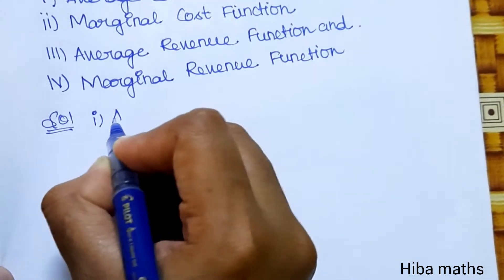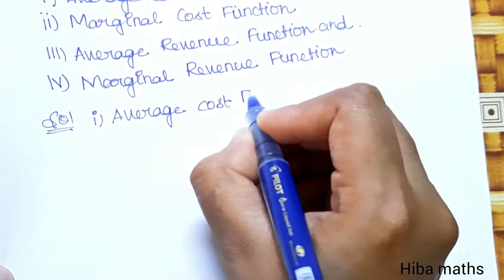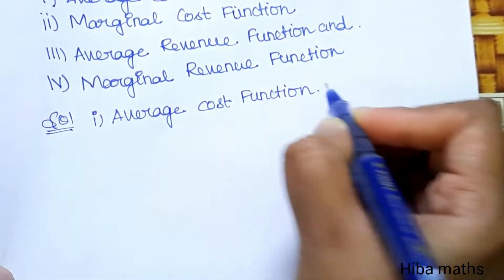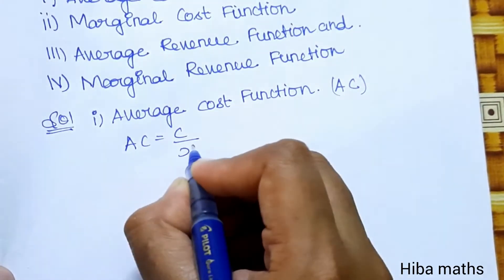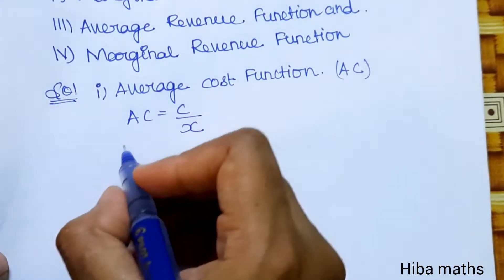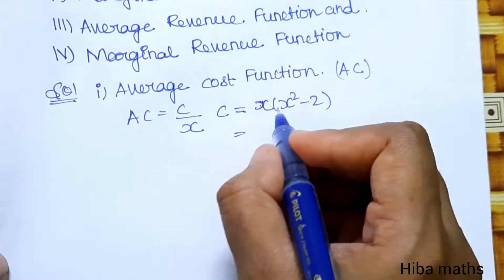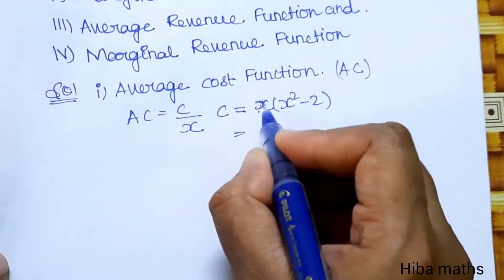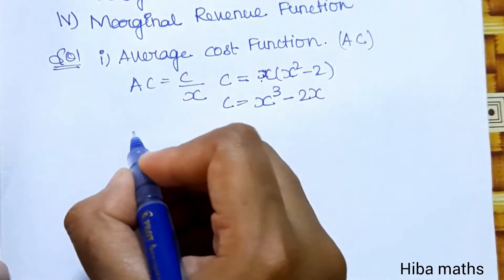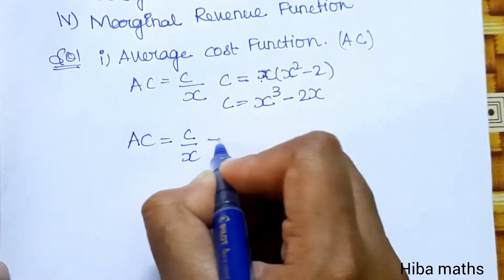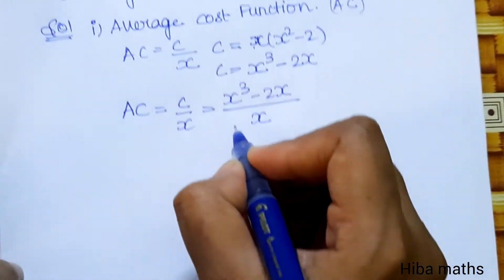Solution: First, the average cost function. Average cost function is AC, where AC = C/x. The given cost function is C = x(x² - 2). Expanding: C = x³ - 2x. So AC = (x³ - 2x) / x.